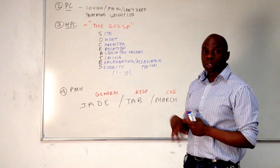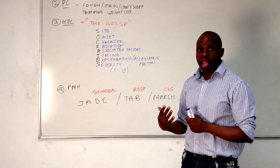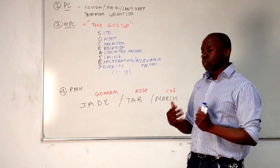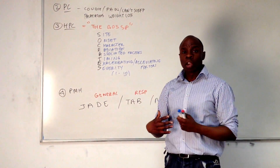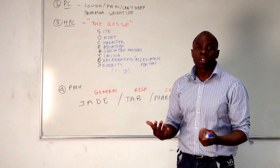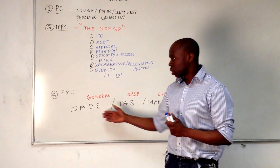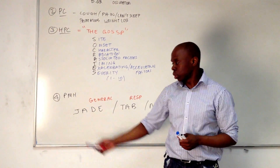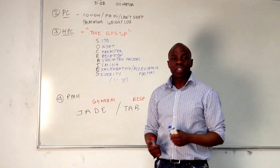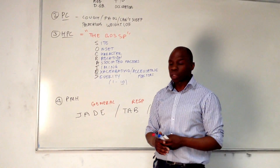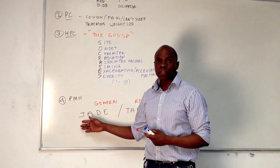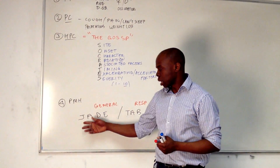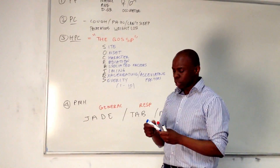I normally say to the patient: 'I'm just going to ask you a couple of quick questions now.' These are going to be closed-type questions, but you don't tell them that. You tell them, 'I just want you to answer yes or no to these questions.' J stands for jaundice. Have you ever suffered from jaundice? Some people know what it is, some don't. Or have you ever found somebody saying you look a bit yellow, or been treated for being a bit yellow? And if that's a no, then you move on.